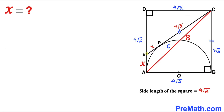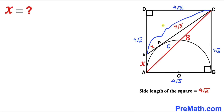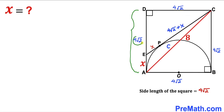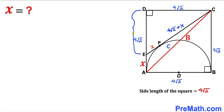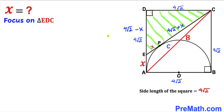The whole length EC is the sum of EP and PC, so EC equals X plus 4√2. Looking at side length AD which is 4√2, the remaining length ED is 4√2 minus X.